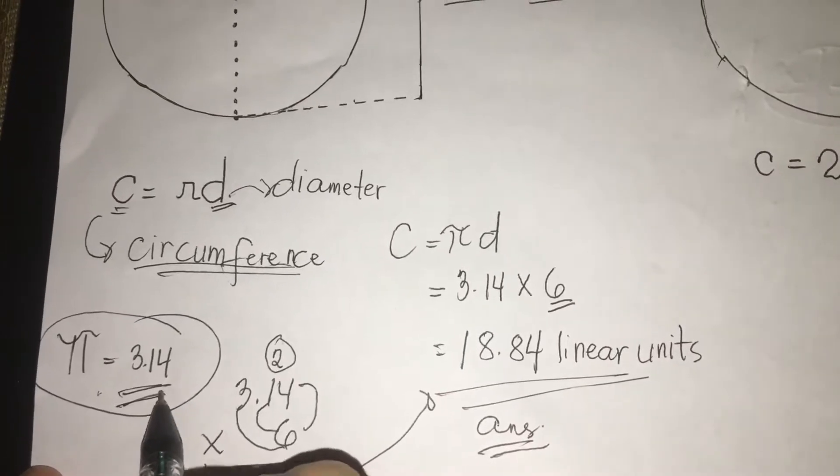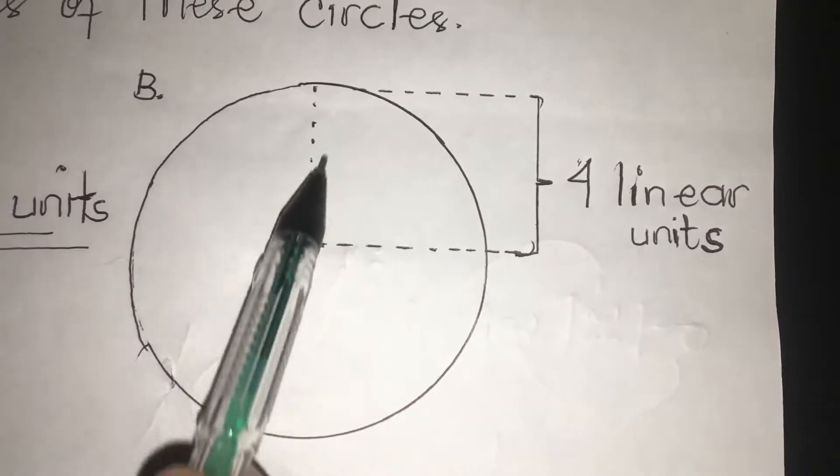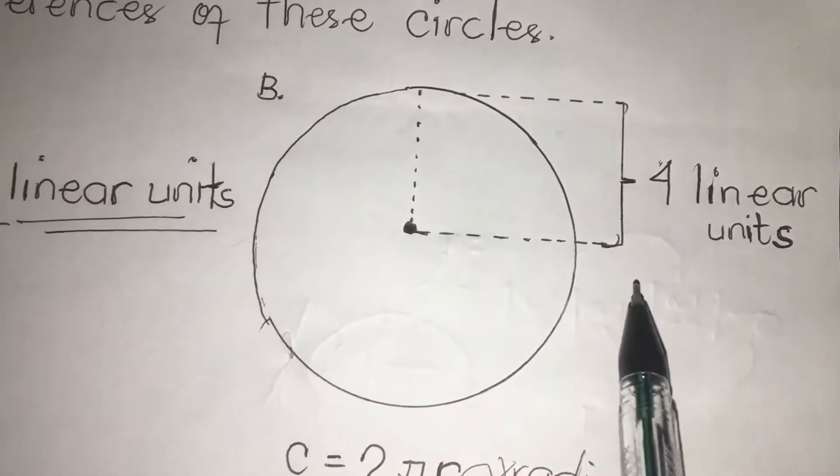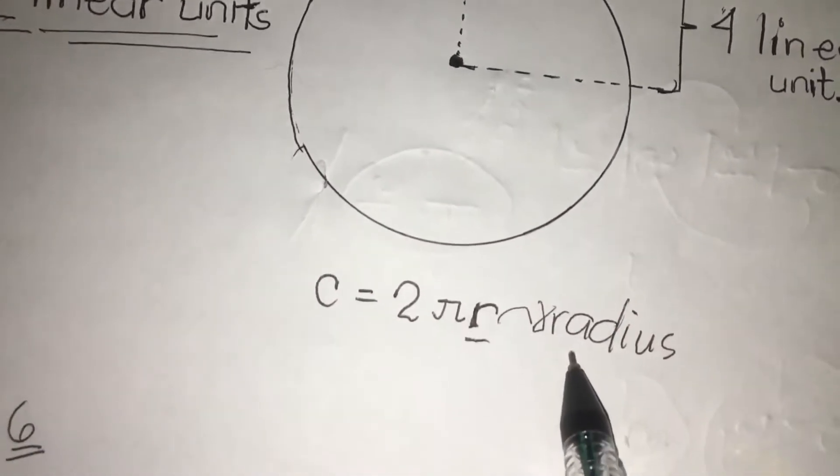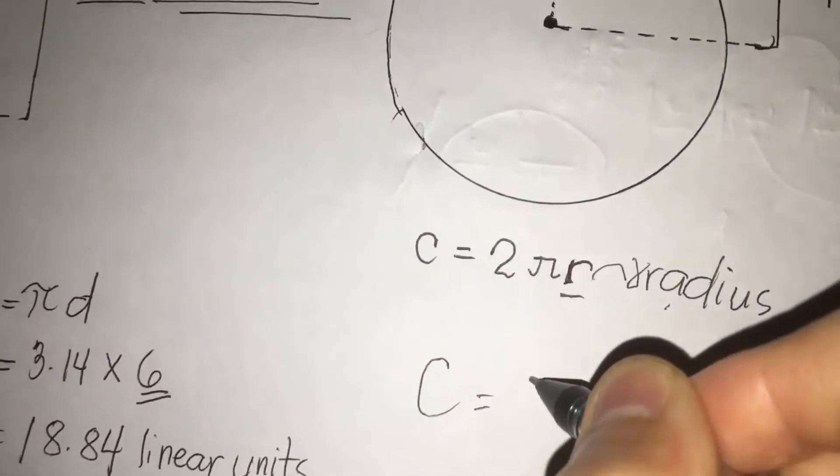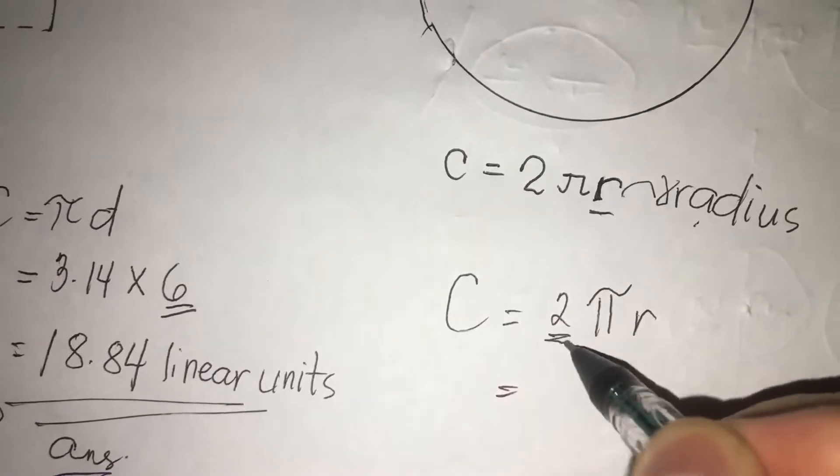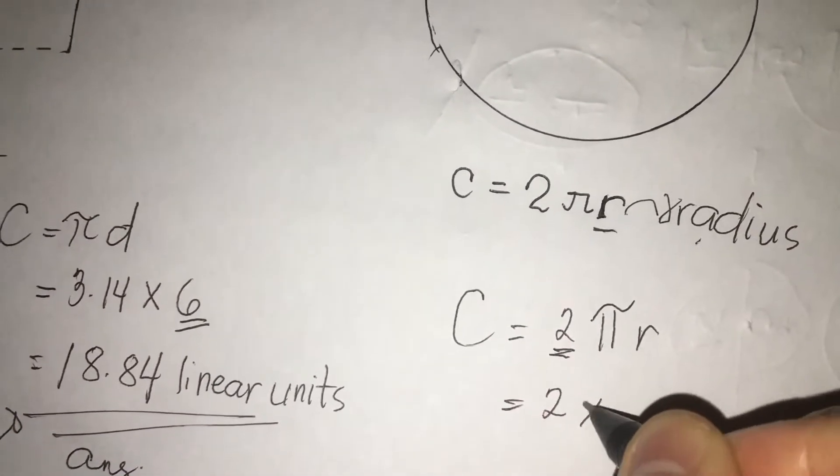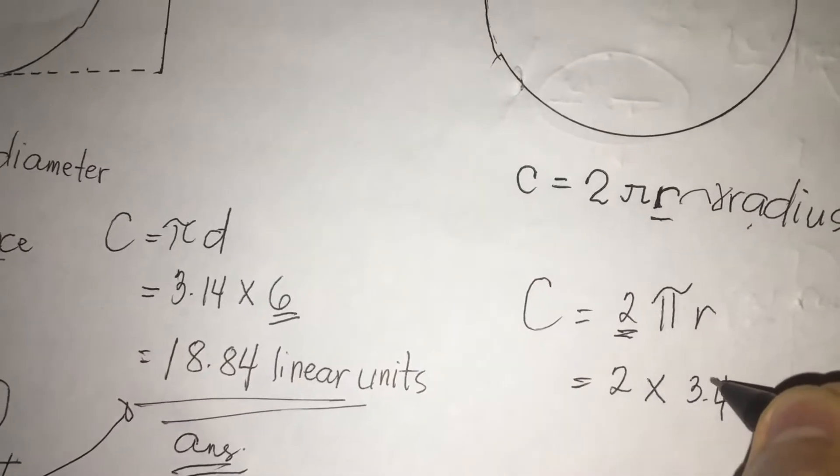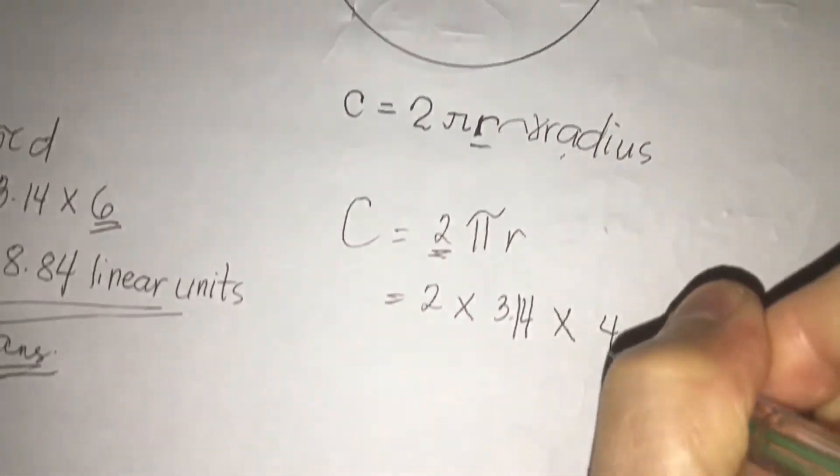Next, for number 2, our letter B, we have 4 linear units. But actually class, our drawing shows about the half of this circle. So taking about half of this circle, this is what we call radius. R stands for radius. So we're going to rewrite C equals 2 pi R equals 2 times the value of pi, which is 3.14 times 4.